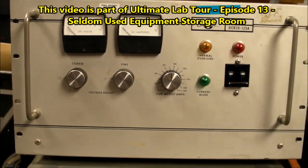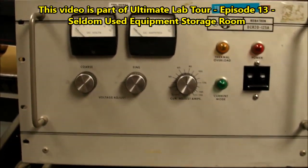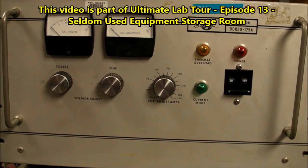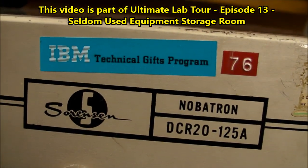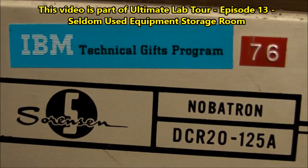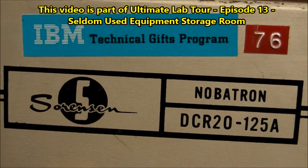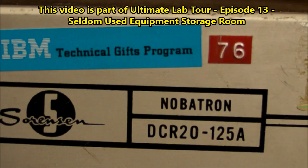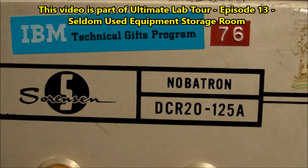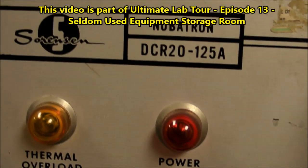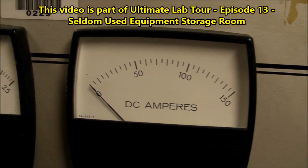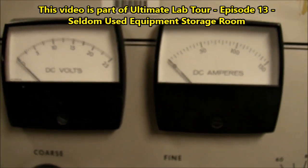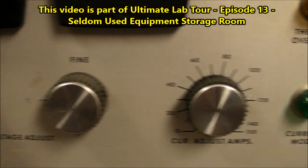And finally, the coolest thing in here, or I think one of the coolest, is this big power supply, apparently given to us by IBM Technical Gift Program years ago. It's a Sorensen Nobotron DCR20-125A. That's 20 volts regulated and 125 amps maximum current capacity output. Really awesome stuff.